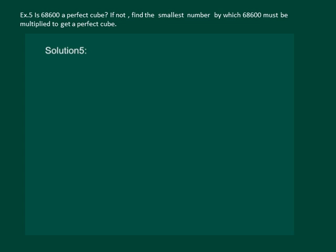Let us read the question. Is 68600 a perfect cube? If not, find the smallest number by which it must be multiplied to get a perfect cube.